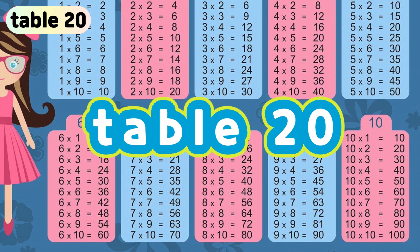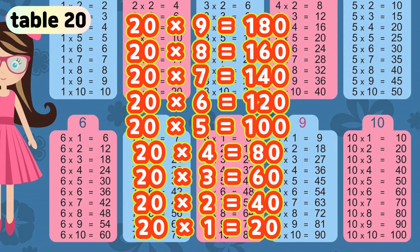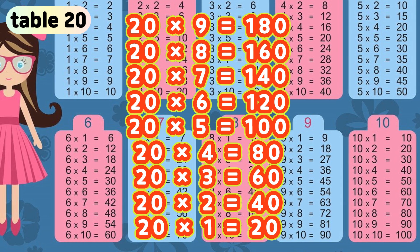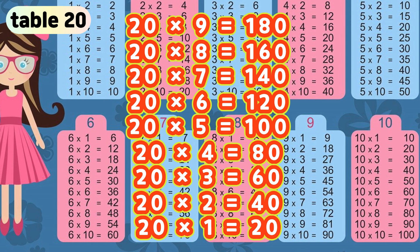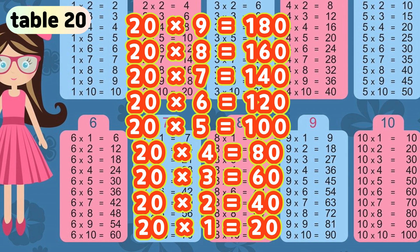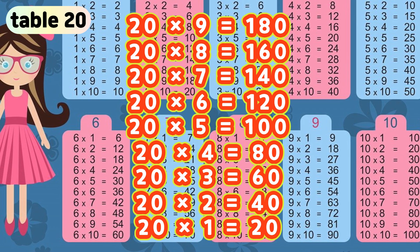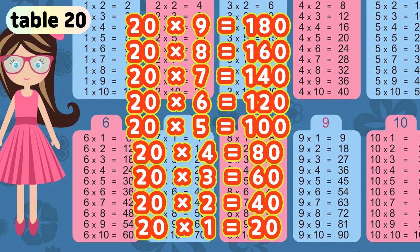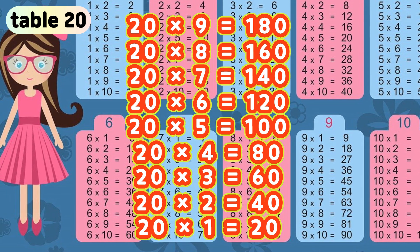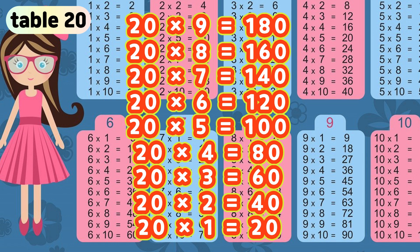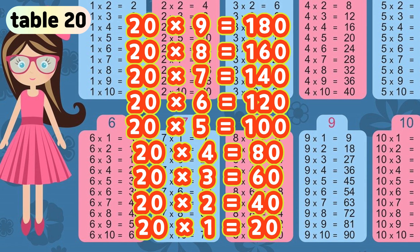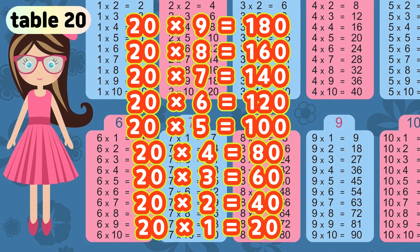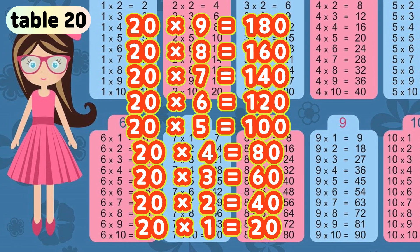Table 20. 20 times 9 is 180. 20 times 8 is 160. 20 times 7 is 140. 20 times 6 is 120. 20 times 5 is 100. 20 times 4 is 80. 20 times 3 is 60. 20 times 2 is 40. 20 times 1 is 20.